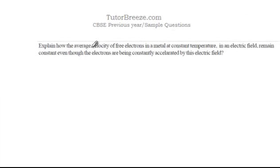In this question, we need to show that the average velocity of the free electrons in the presence of an electric field is constant. In a metal, the free electrons have a very random motion. Say the path of an electron is shown like this.